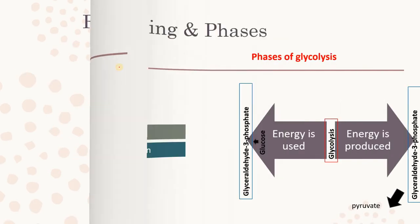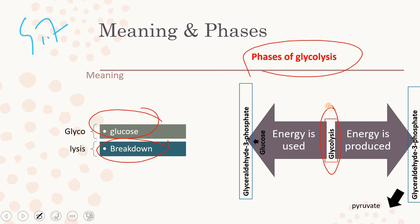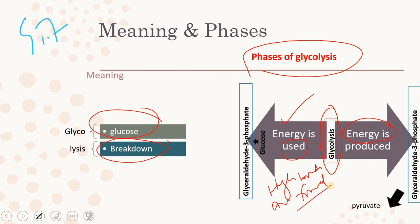Glyco relates to glucose and lysis means breakdown, as we discussed at the beginning. Now, the phases of glycolysis: there are two phases. In one phase, energy is used, and in the other, energy is produced. Remember, when energy is used, high-energy bonds are created — this is a technical point to remember.